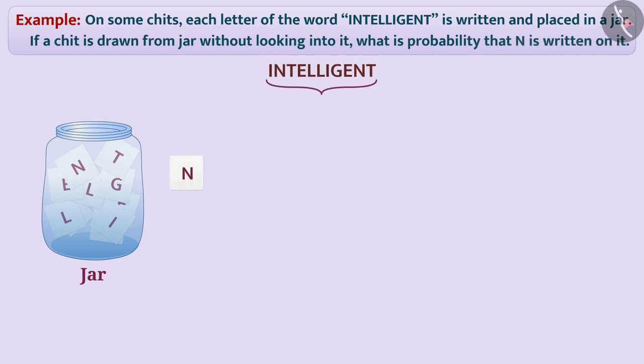Intelligent, this word has total 11 letters. That is, the number of chits will be 11. Therefore, total number of outcomes will be 11.